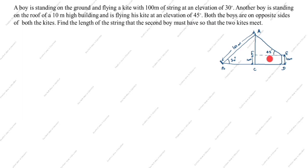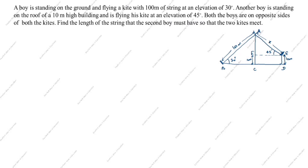Now, what do we need to find in this drawing? We need to find the length of the string that the second boy must have so that the two kites meet. The first boy's string and the second boy's string — we need to find this length, and we will take it as x. We will use this triangle.